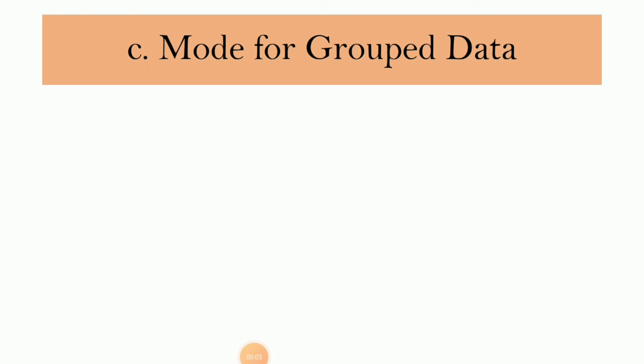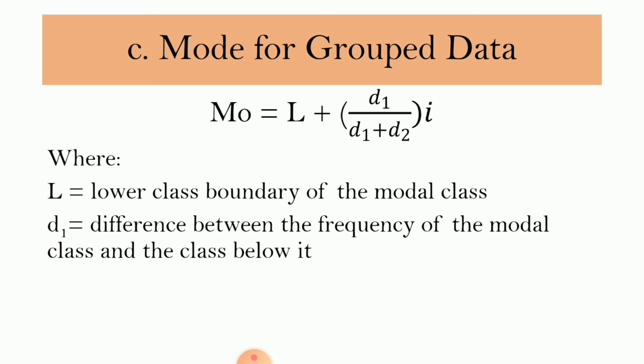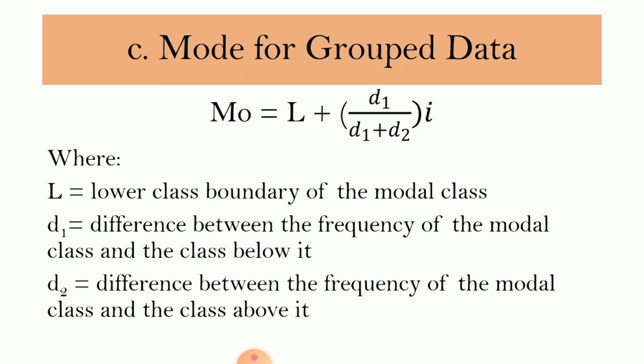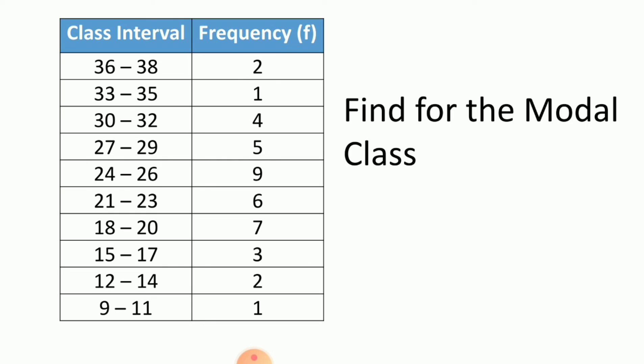And last is the mode for grouped data. The formula is: MO equals L plus the quantity d sub 1 over d sub 1 plus d sub 2 times I, where L is the lower class boundary of the modal class; d sub 1 is the difference between the frequency of the modal class and the class below it; d sub 2 is the difference between the frequency of the modal class and the class above it; and I is the class size. The modal class is the class with the highest frequency. From our frequency table, the class with the highest frequency is 24 to 26 with a frequency of 9.